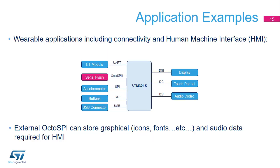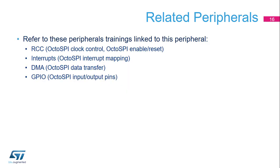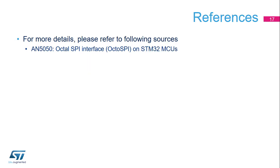Wearable applications requiring low power management together with high quality HMI can benefit from the STM32L5 Octo SPI interface to store in an external flash all the graphical content needed, such as background images, high resolution icons, or fonts to support multiple languages. Additional audio data for ringtones can also benefit from the large space offered by the external flash. The low pin count needed to drive such devices allows a very optimized system integration. You can refer to peripheral training slides related to RCC, interrupts, DMA, and GPIO for additional information. For more details, please refer to application note AN5050 about the Octo SPI interface.